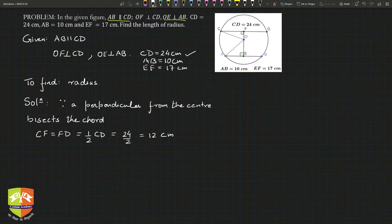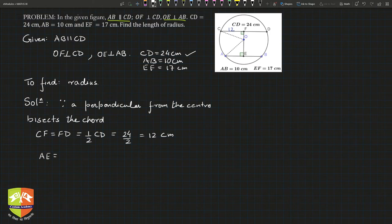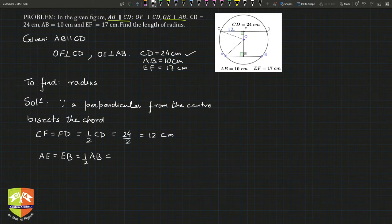So CF is 12 centimeters. By the same logic, AE equals EB equals half of AB. The perpendicular dropped from the center bisects the chord. AB is 10 centimeters, so AE equals 10 divided by 2, which is 5 centimeters.